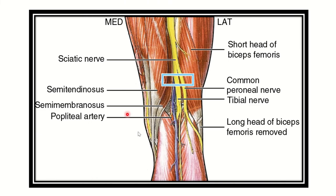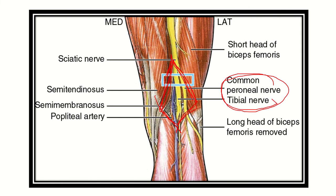Here we can see the posterior aspect of the knee joint. This diamond-shaped space is known as the popliteal fossa, located in the posterior aspect of the knee joint. A nerve running downward is the sciatic nerve, and we can see it bifurcate — the larger branch is the tibial nerve and the other is the common peroneal nerve.